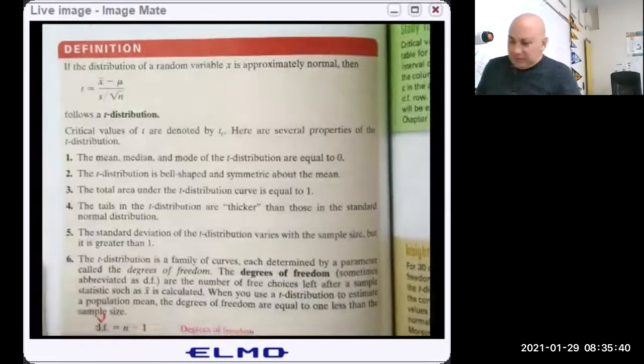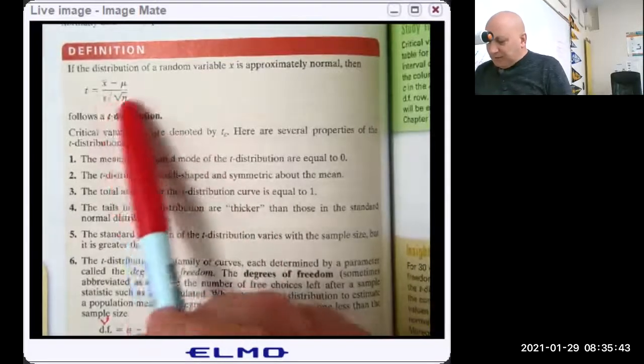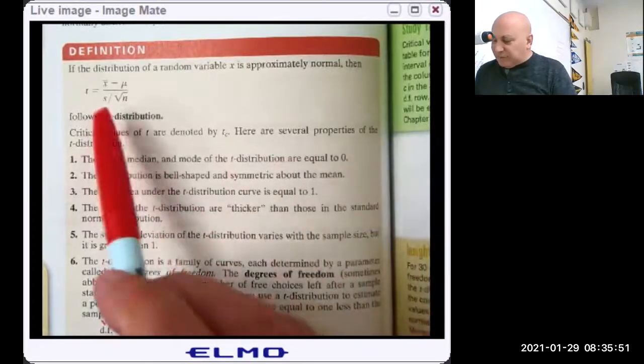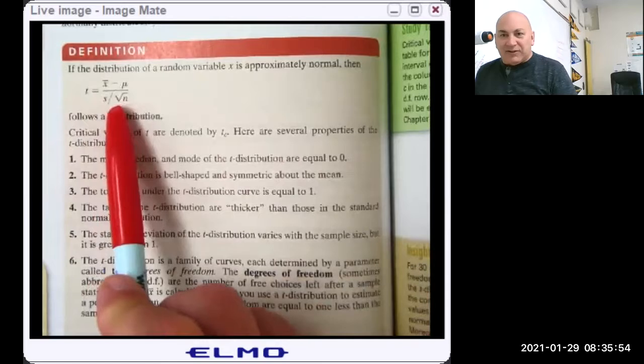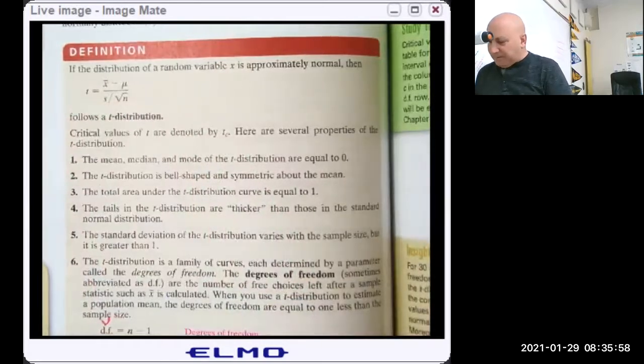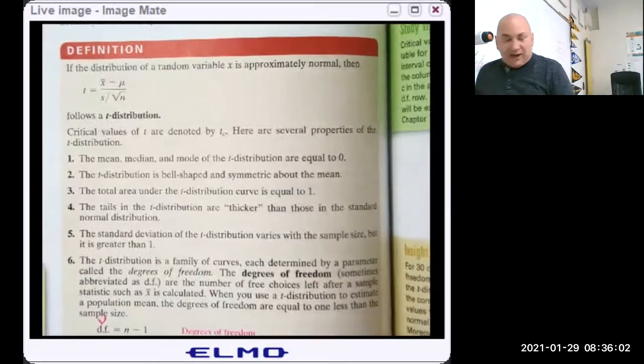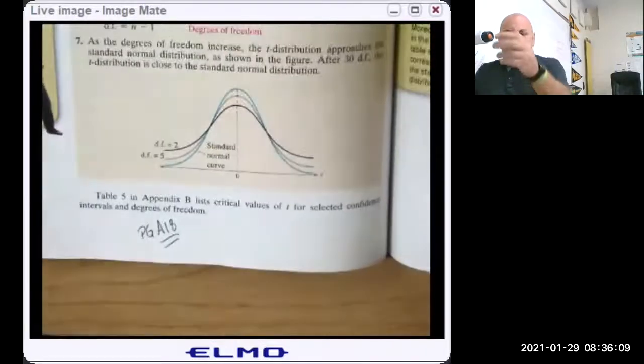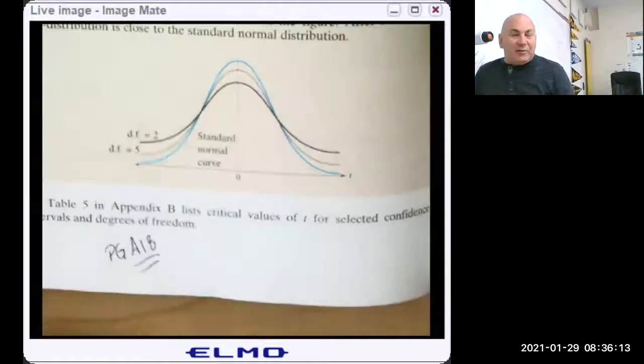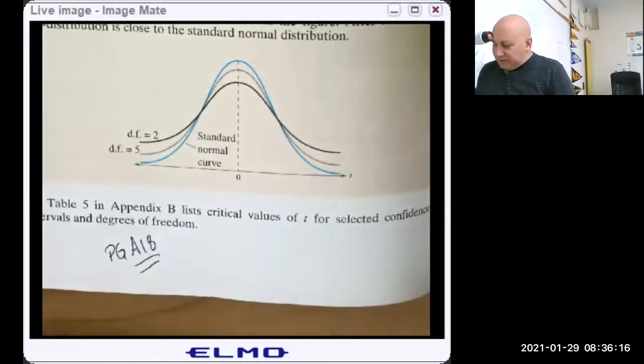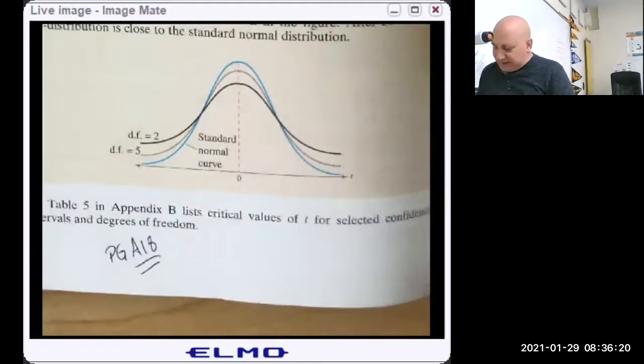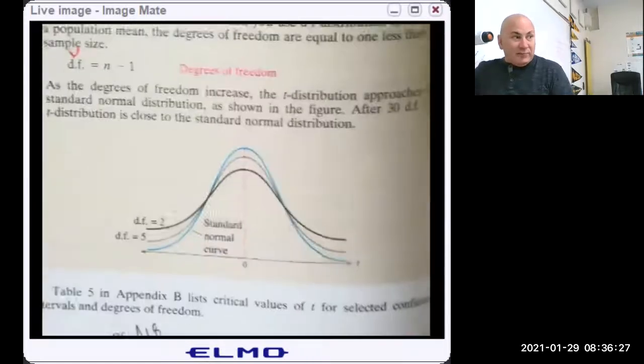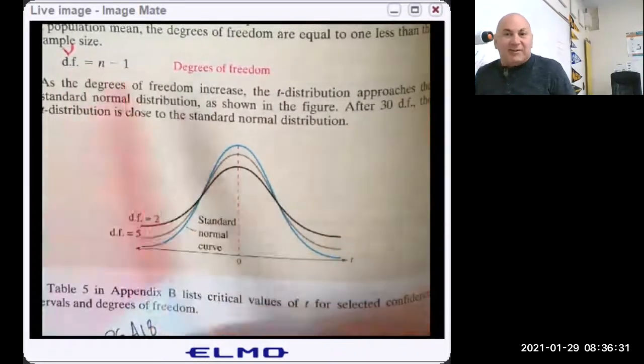Now you see that the T statistic looks much like the formula for the Z statistic. The only difference is S over root n in the denominator instead of sigma over root n. So essentially, I'm going to shortcut this. I encourage you to read this on page 310. But the bottom line is there are an infinite number of T curves, and there is a different T curve for each DF for degrees of freedom. We're going to talk about degrees of freedom in a moment. So for right now, for our purposes, degrees of freedom is just your sample size minus one, and I'll show you why that is.